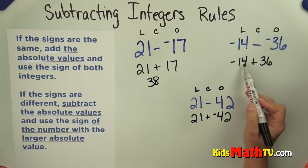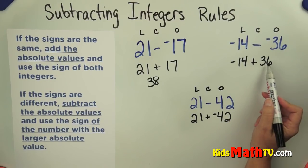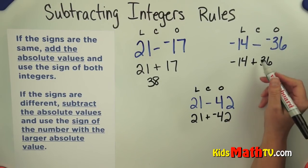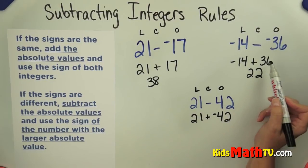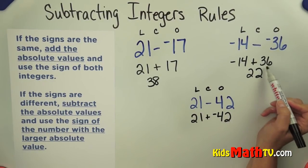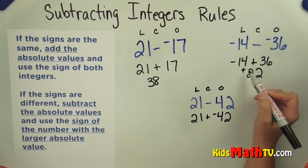Over here the signs are different, so I'm going to subtract their absolute values. 36 minus 14 is 22. I give it the sign of the number with the larger absolute value. Positive 36 has a larger absolute value, so the answer is positive. You can put the positive sign or leave it off.